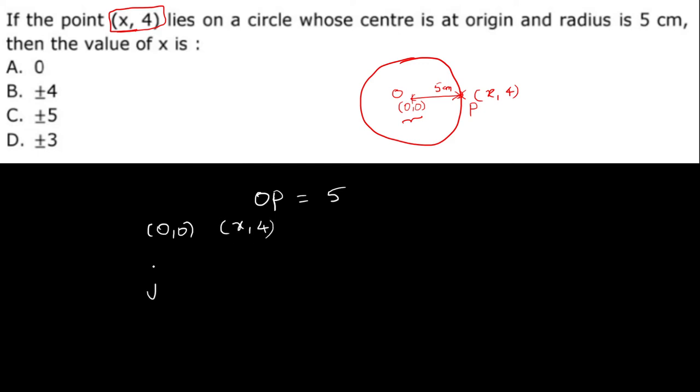Using the distance formula: root of x2 minus x1 whole square plus y2 minus y1 whole square equals the distance.